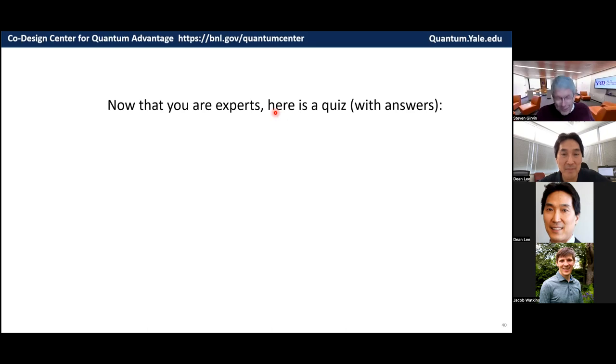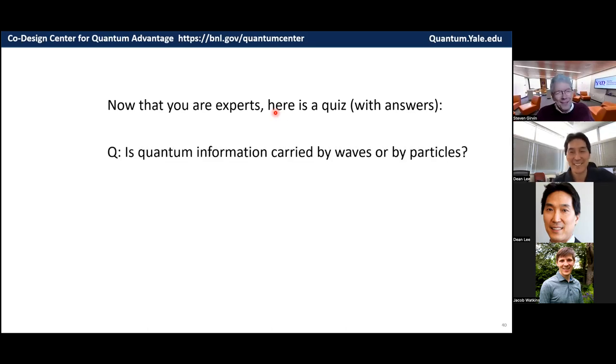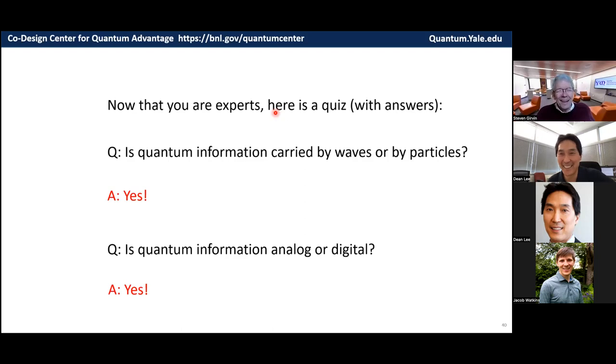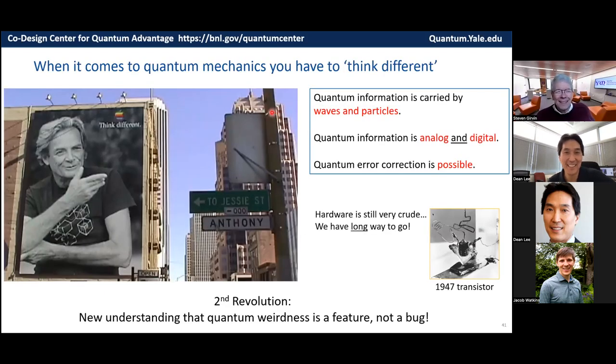But now you're all experts, I hope. And so here's a quiz, but don't worry, I'll give you the answers. Is quantum information carried by waves or particles? Of course, the answer is yes. Is quantum information analog or digital? Yes. And so I hope I've convinced you that quantum mechanics is strange and different. Information is carried by waves and particles. It's analog and digital. And quantum error correction is possible. And we're just beginning to learn how to do it.